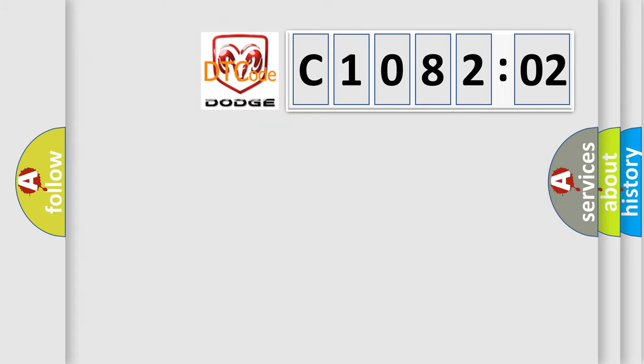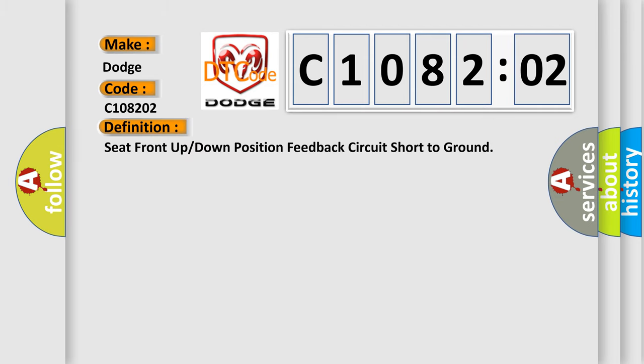So, what does the diagnostic trouble code C108202 interpret specifically for Dodge car manufacturers? The basic definition is seat front up or down position feedback circuit short to ground.